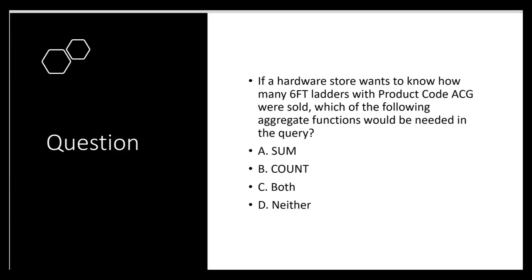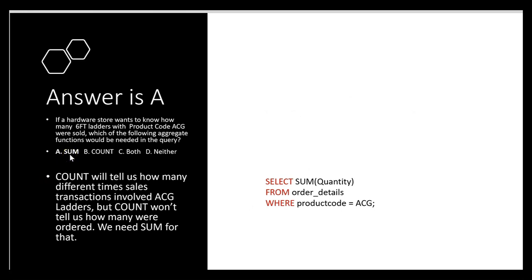You might also see a question like this: 'If a hardware store wants to know how many six-foot ladders with product code ACG were sold, which aggregate function would be needed in the query — SUM or COUNT?' The answer is A — SUM. SUM will tell us how many ladders were sold. COUNT only tells us how many different sales transactions involved ACG ladders. So the query would be: SELECT SUM(quantity) FROM order_details WHERE product_code = 'ACG';